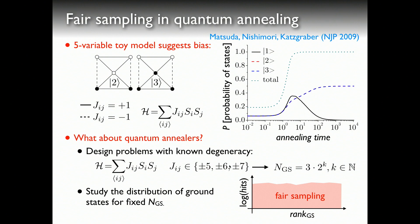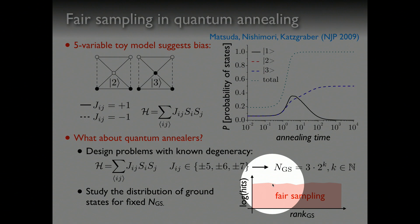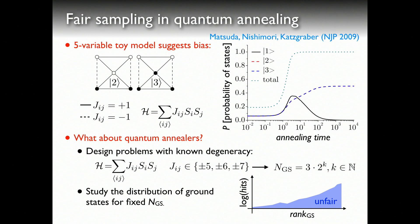What we did is a systematic study: fix the number of variables in the problem, fix the number of minimizing configurations, and then look at how many times you find a given configuration when you keep repeating your simulation a few tens of thousands of times. If sampling is fair, what you expect to find — when you rank-order the times you find the solutions — is a distribution that is roughly flat. If sampling is unfair, you find something that is obviously skewed or biased.